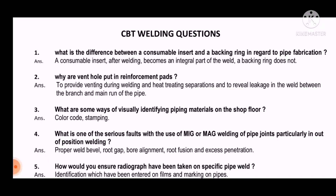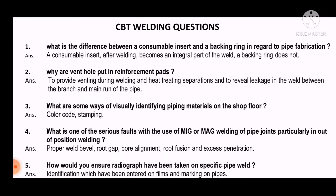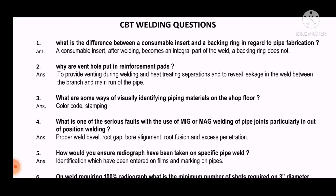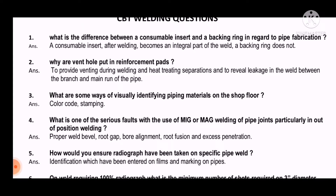Question 2: Why do we put a hole in a reinforcement pad? As a welding QC, we should know what a reinforcement pad is and why we use it. Reinforcement pads are generally used for high pressure lines where a branch connection needs to be taken off the main line. The answer is: to provide venting during welding and heat treating operations, and to reveal leakage in the weld between the branch and main run of the pipe.